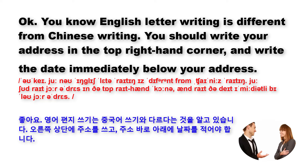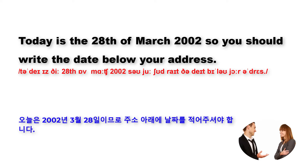Okay. You know, English letter writing is different from Chinese writing. You should write your address in the top right-hand corner and write the date immediately below your address. Today is the 28th of March, 2002, so you should write the date below your address.